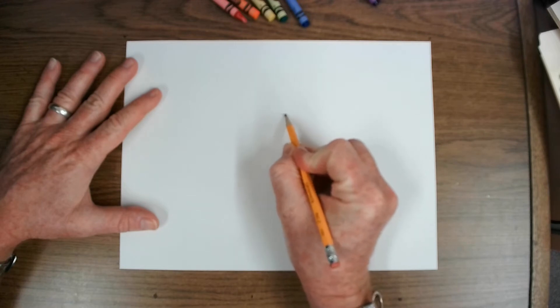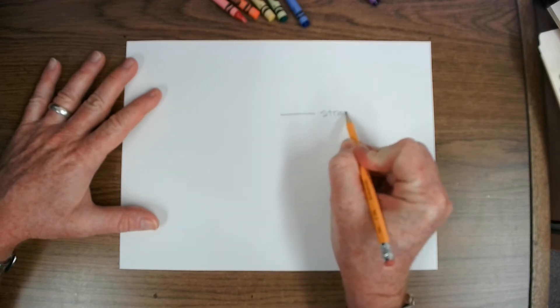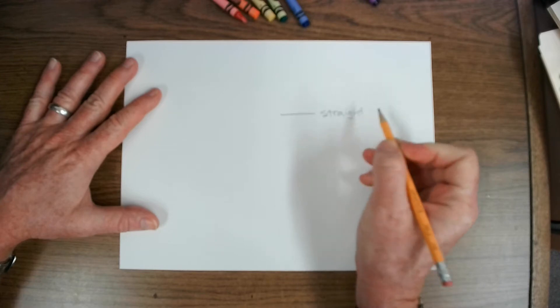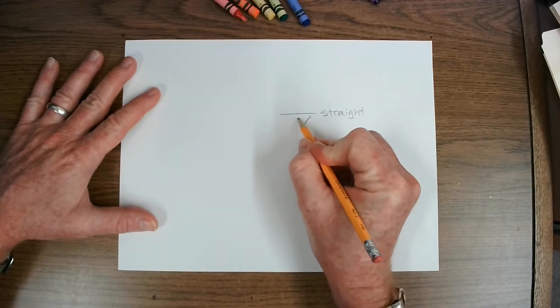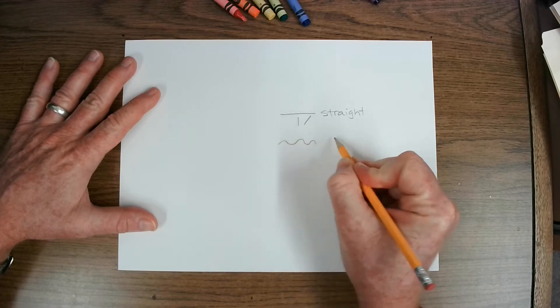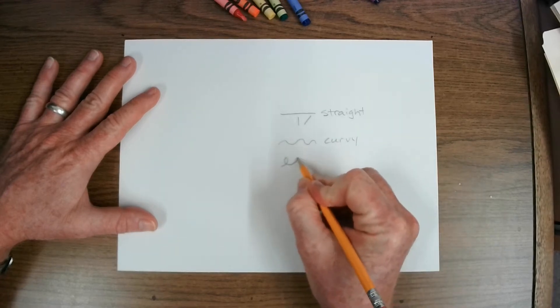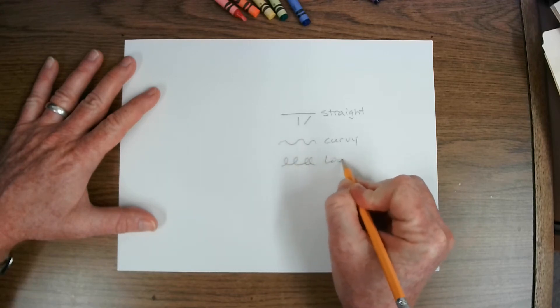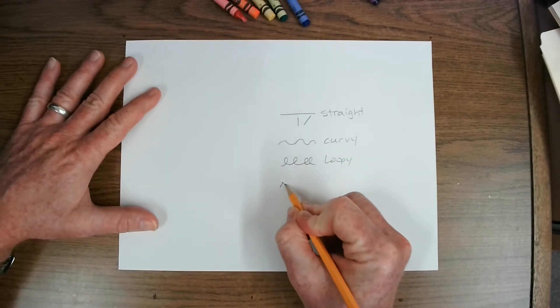There's four types of lines. We have straight lines. Straight lines can go in any direction. Any of these lines can go in any direction, still considered a straight line. We have curvy lines, we have loopy lines, and we have zigzag lines.